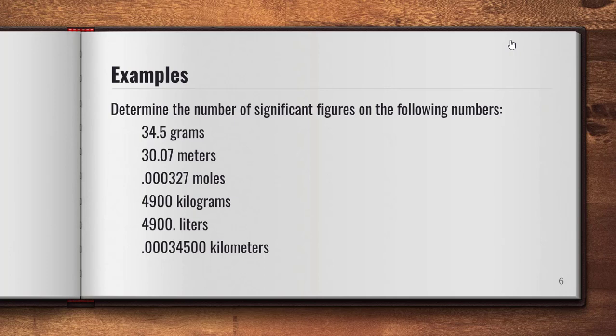4900 with a decimal point — because the decimal point is there, that states we have exactly 4900 liters, so that has four significant figures. The last example is a bit tricky: we have three zeros that precede and two zeros after, and we do have a decimal point. The preceding zeros do not count, but the zeros after do count. So that number has five significant figures.